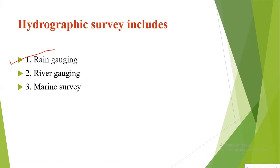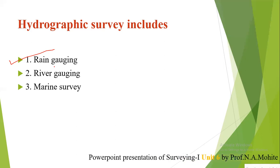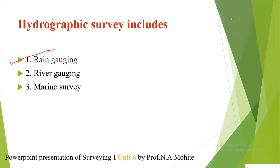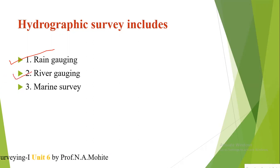From rain gauging, we can also determine if a probable flood is going to occur in the downstream area. The next component is river gauging, which involves measurement of the discharge of a river and the establishment of a gauge post on one of its banks. This is done to directly read the highest flood level so that a warning may be given to surrounding downstream areas for any precautionary measures to be taken whenever a flood is going to take place.